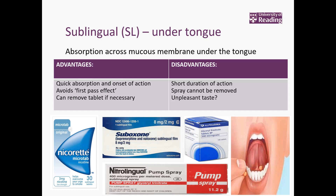Things like Suboxone or Subutex — buprenorphine — you will see this in substance misuse clinics and in community pharmacy. In prisons, this is very helpful for people with heroin or opioid addiction as a substitute. This is given under the tongue and the patient is observed to keep it under their tongue for it to dissolve. Obviously, the tablet could be removed — some patients might pocket it and then sell it — so sometimes a pharmacist needs to observe that it has dissolved and been absorbed into the system.